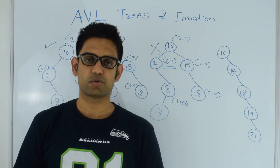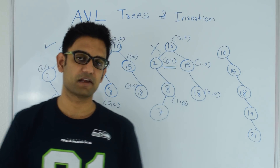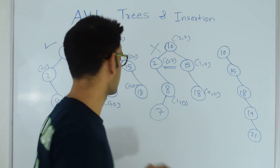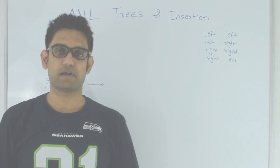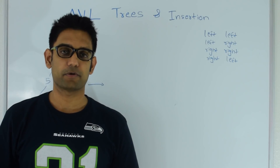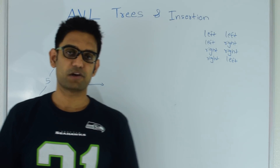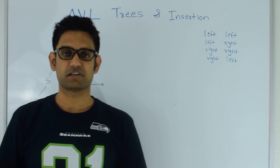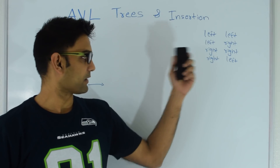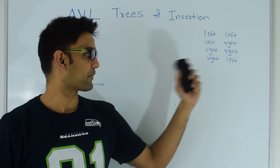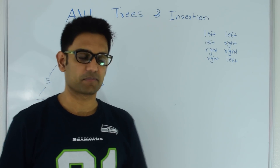Next let's look at how we insert into an AVL tree. There are 4 simple rules to follow while doing an insertion into an AVL tree: left-left, left-right, right-right and right-left. Let's understand what that means.